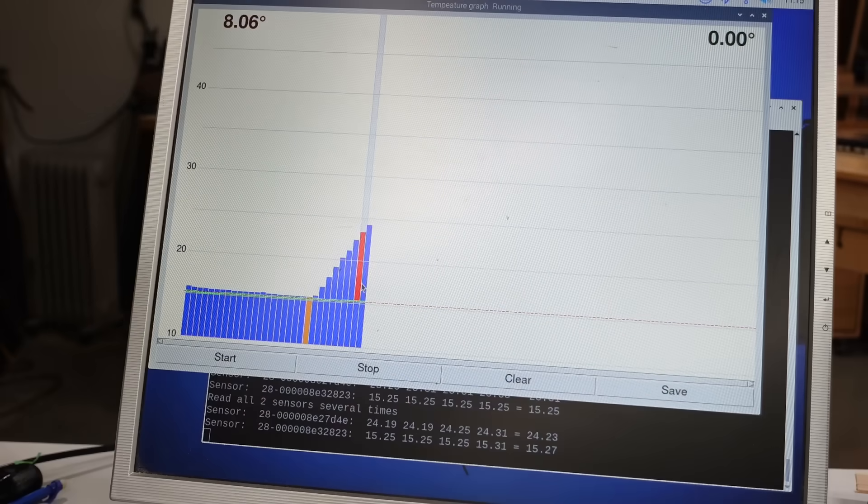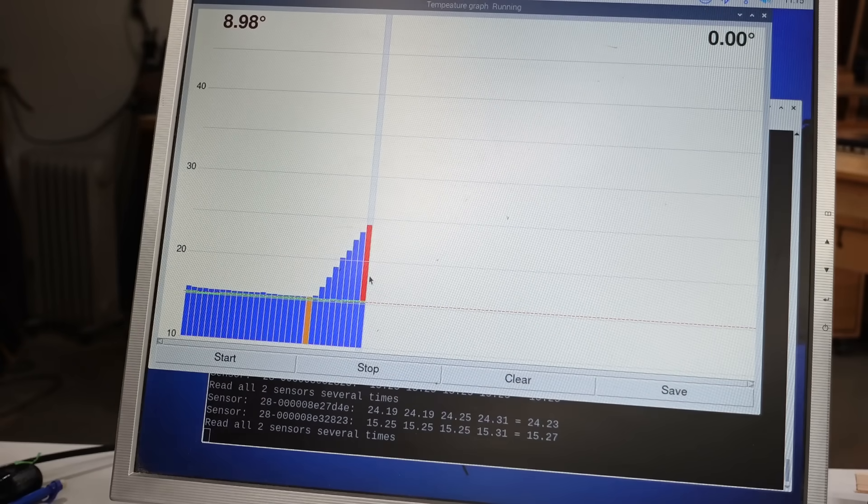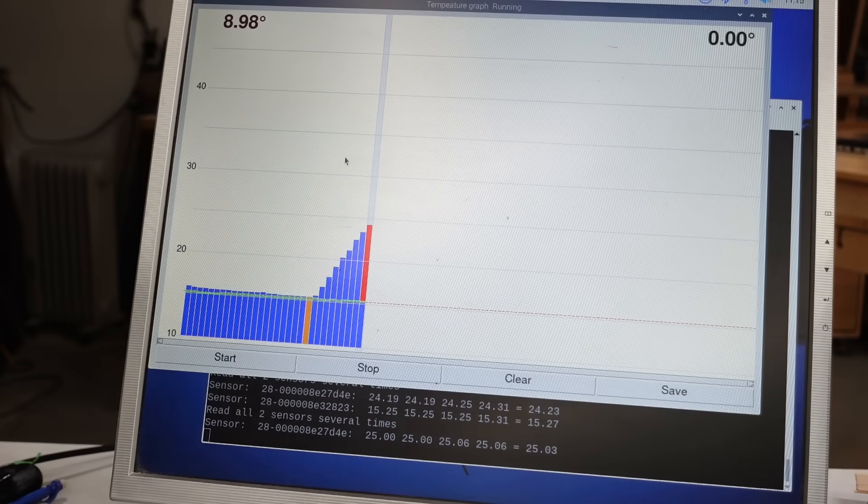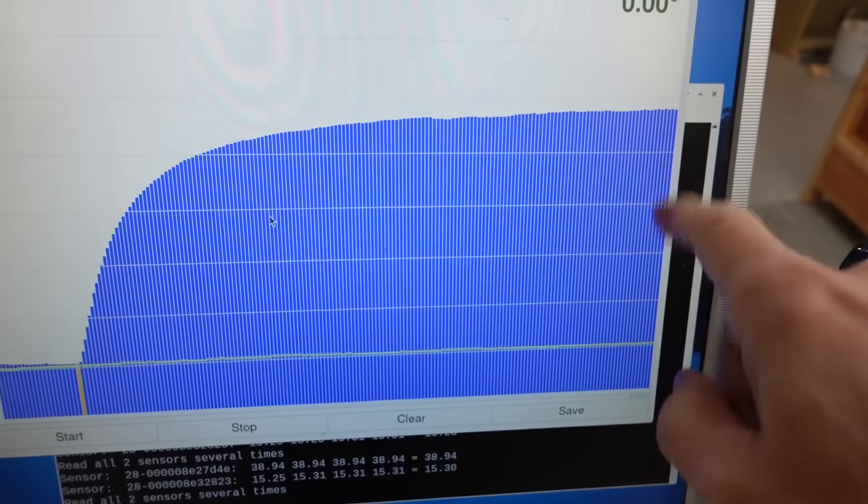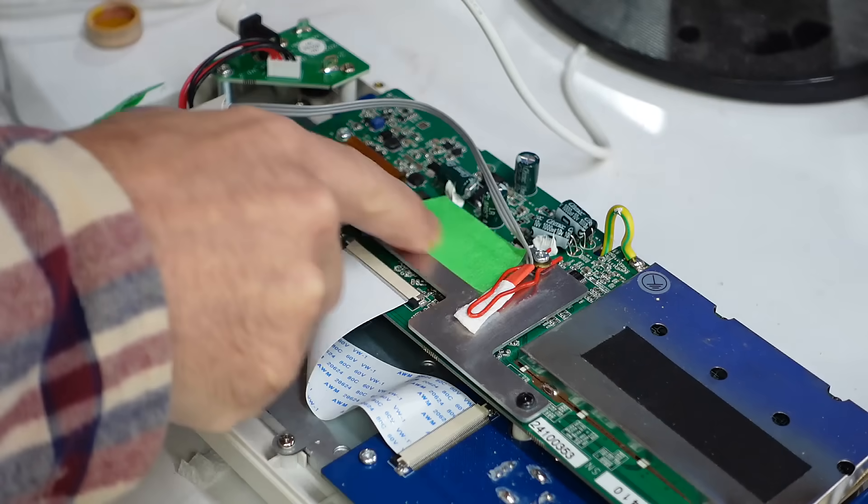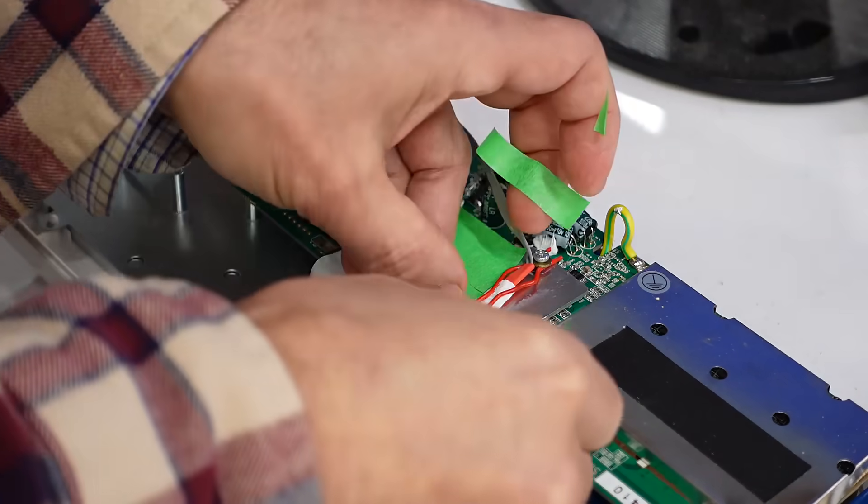And after a few minutes we're already about 9 degrees over ambient but it's gonna take a while to reach equilibrium. Been sitting there for an hour now and I'll consider that temperature to be settled. And now let's add some tape to that heatsink to make it less reflective.